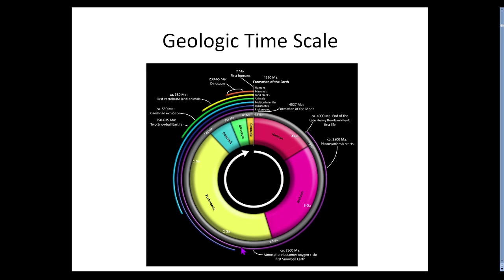Around 2.4 billion years ago the atmosphere becomes oxygen-rich, and this oxygen allows cells to actually begin to evolve. Single cells become multi-cell — the single cells were referred to as prokaryotes, and these are eukaryotes. For another billion years the eukaryotes evolved and eventually started pairing up and stacking themselves more or less like mats, beginning to form multi-cellular life.